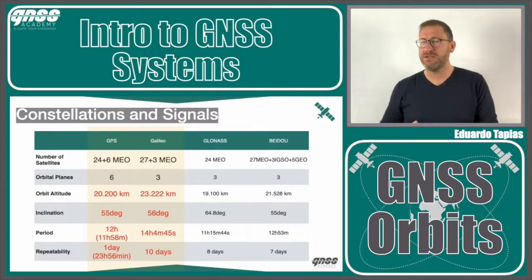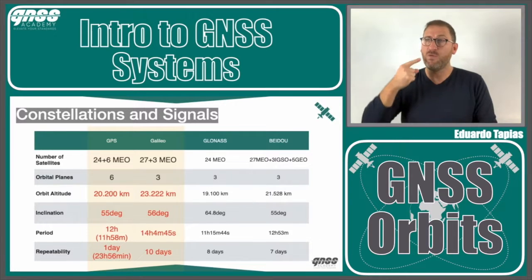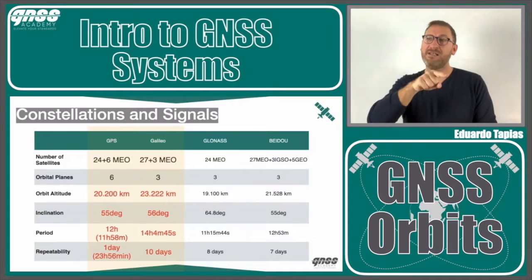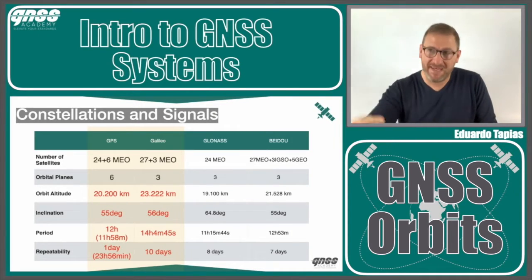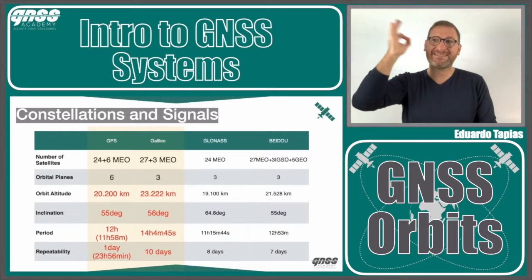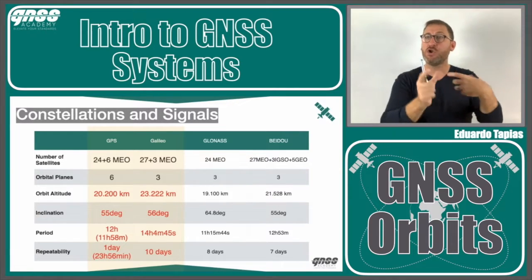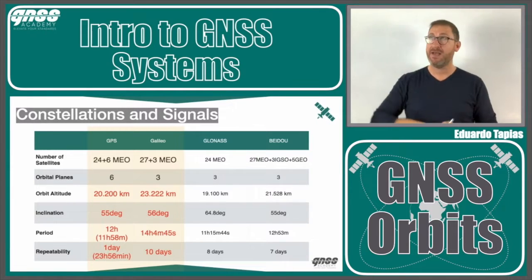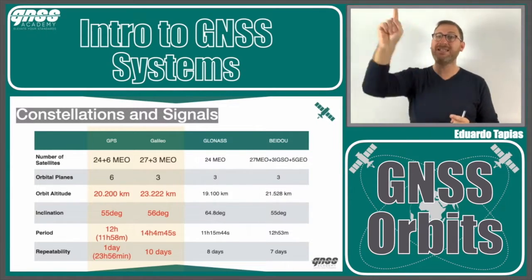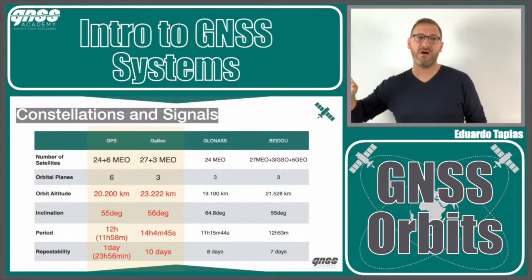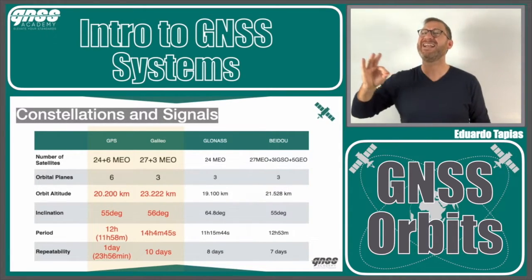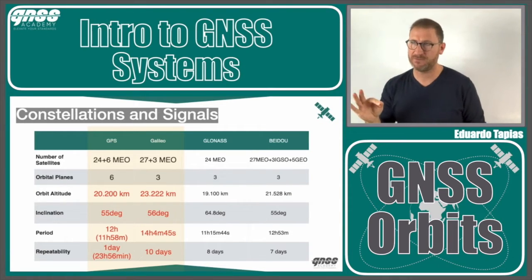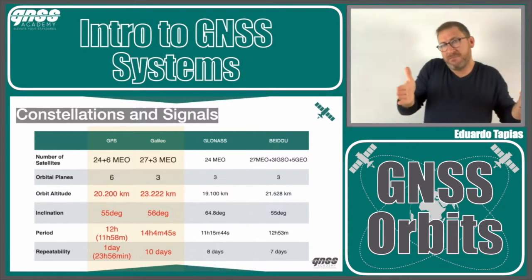The period is very important to keep in mind: GPS satellites have a period of 12 hours, meaning one satellite takes 12 hours to complete one orbit around the Earth. This means that every day, a receiver will see the same satellite at the same point — two turns in 24 hours. It's not exactly 24 hours; it's one sidereal day, which is 23 hours and 56 minutes, so about 24 hours minus four minutes.